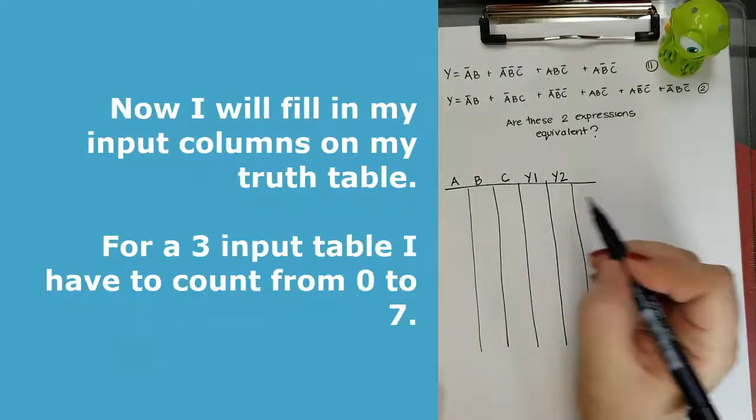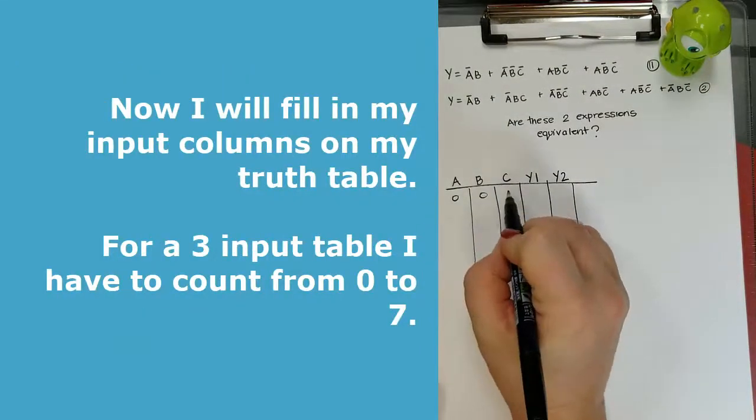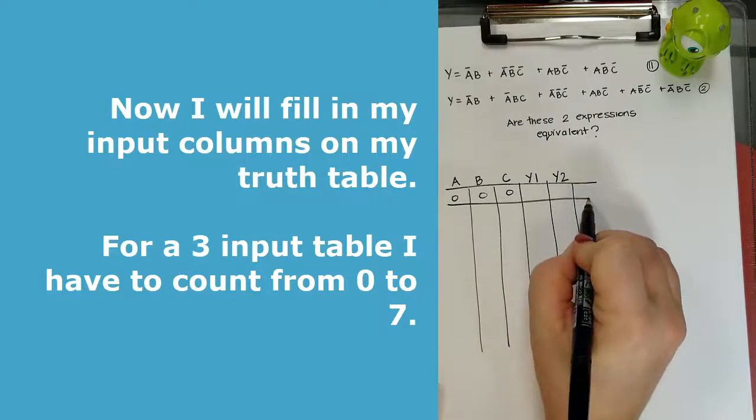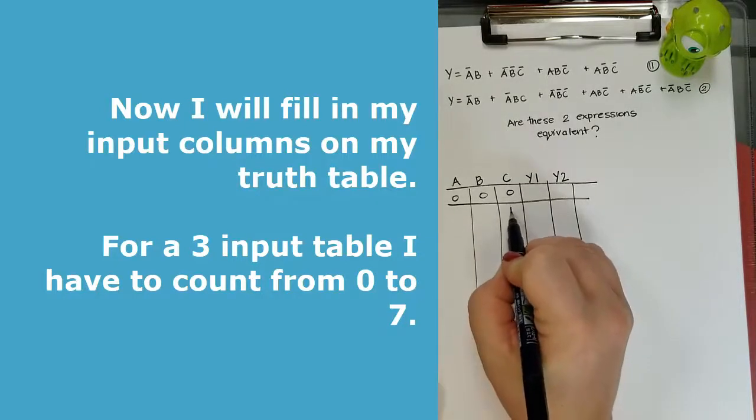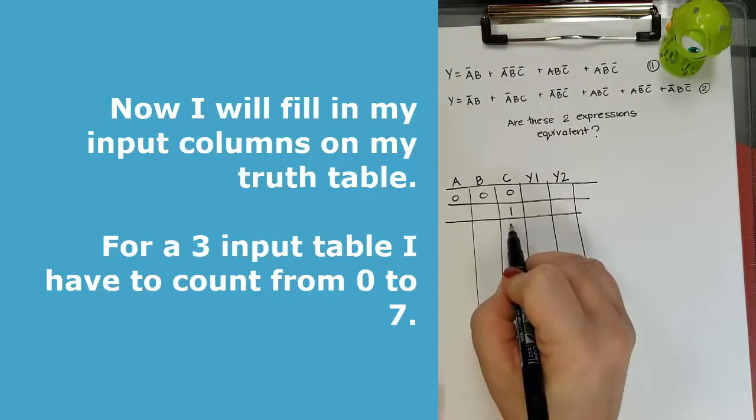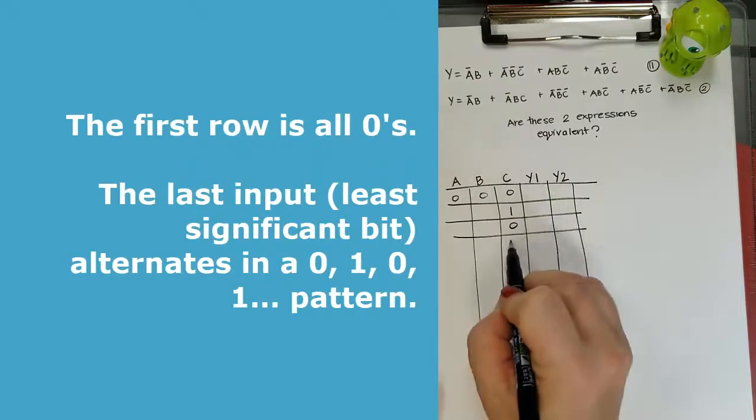So now I have to fill in my truth table, so it's a three input. So I have to count from zero to seven, and then the first row's all zeros.